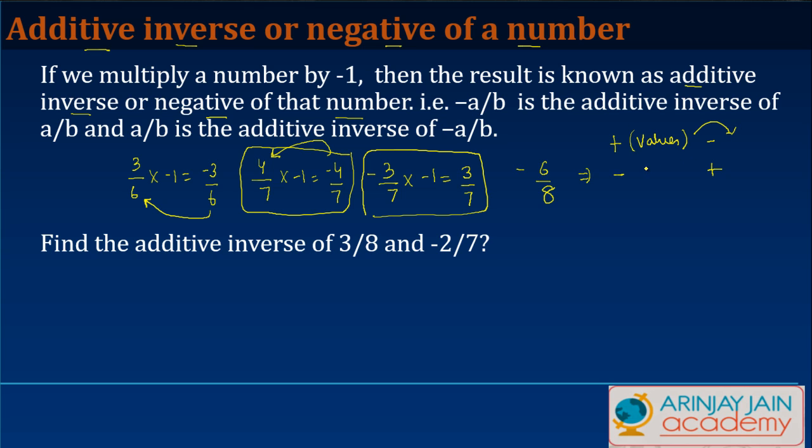So find the additive inverse of 3/8. So 3/8 into -1 gives me -3/8. So -3/8 is the additive inverse of 3/8.